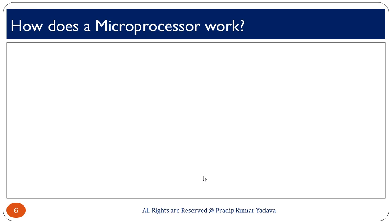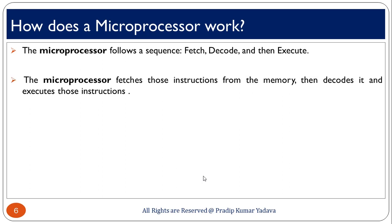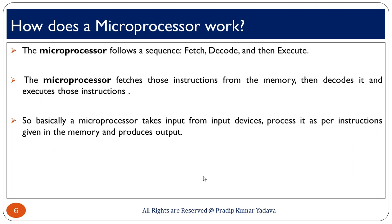How does a microprocessor work? This is very simple. The microprocessor follows a sequence: fetch, decode, and execute. Fetch means fetching the information from memory. A decoder decodes that information obtained from memory or the input device. Execute means the processor works after getting information from the decoder and gives output. Basically, a microprocessor fetches instructions from memory, decodes them, and executes those instructions — taking input from the input device, processing as per the instructions in memory, and producing output.